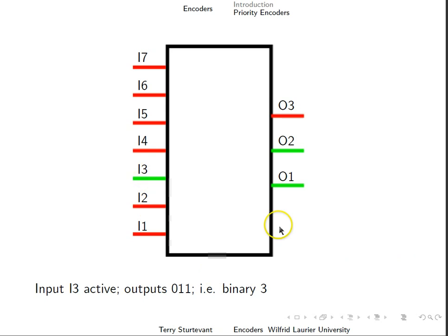Now with input 3 active, the output encodes a binary 3, and so now, regardless of inputs 1 and 2, the output remains a 3, because 3 is the highest number of input active.